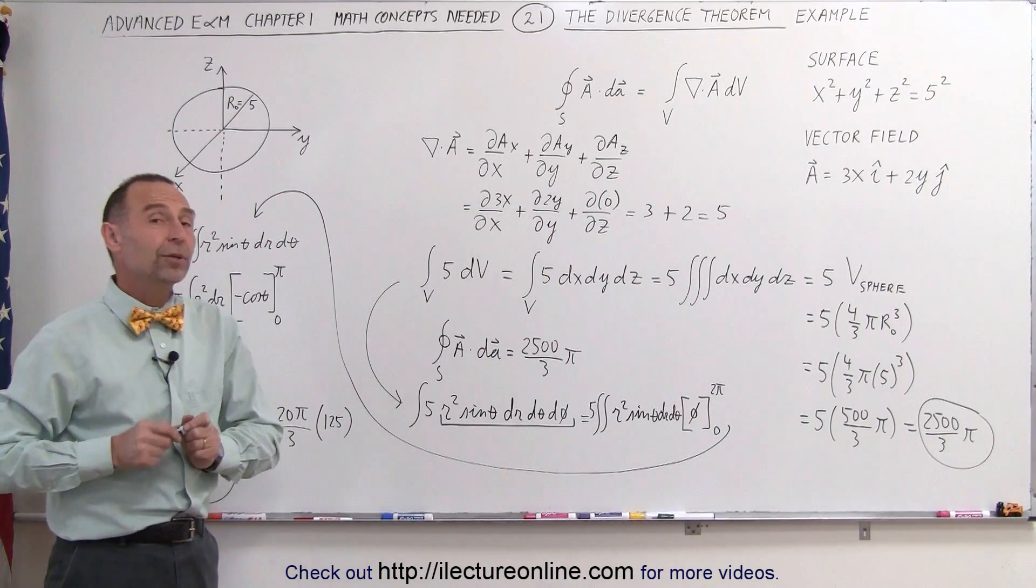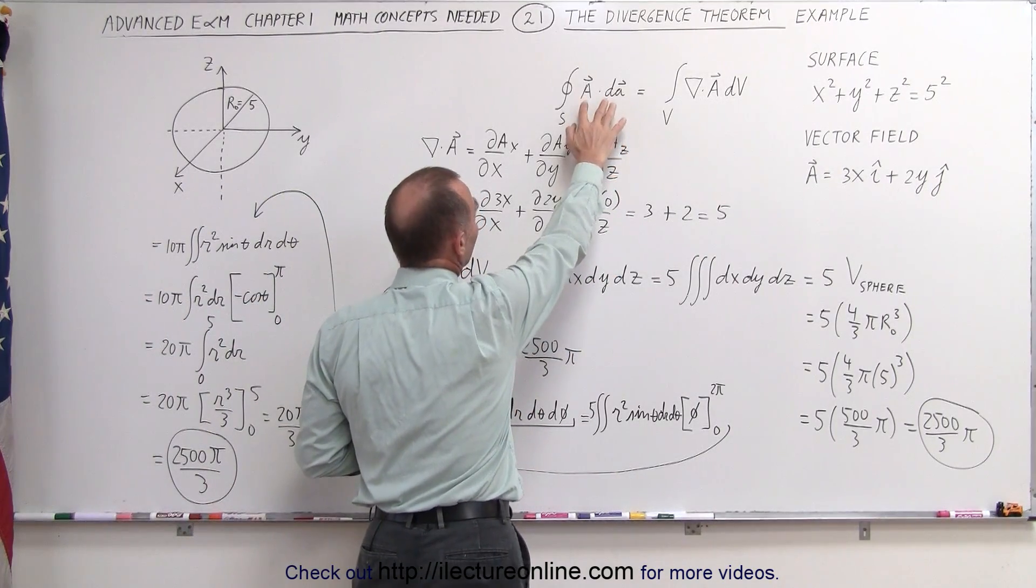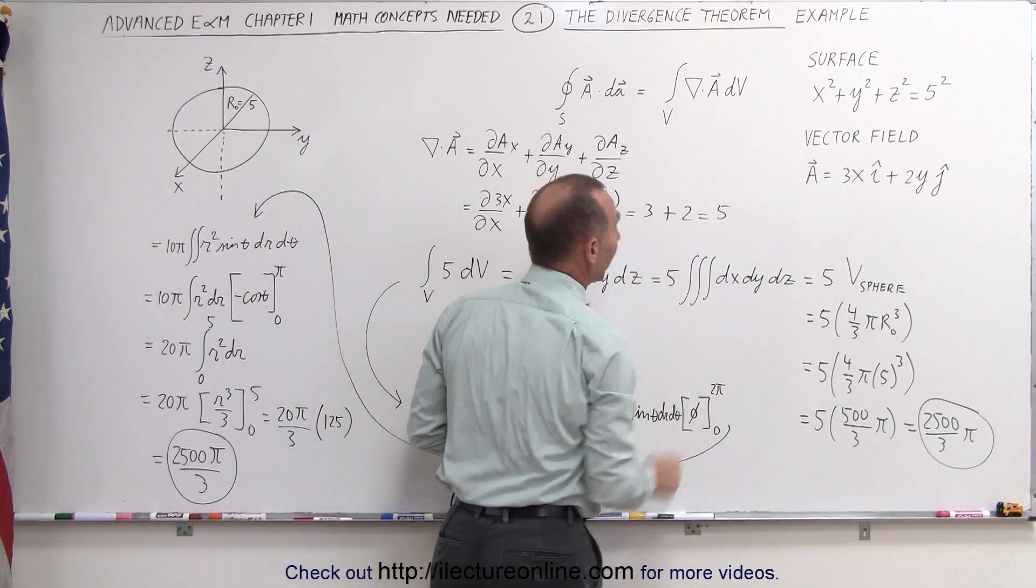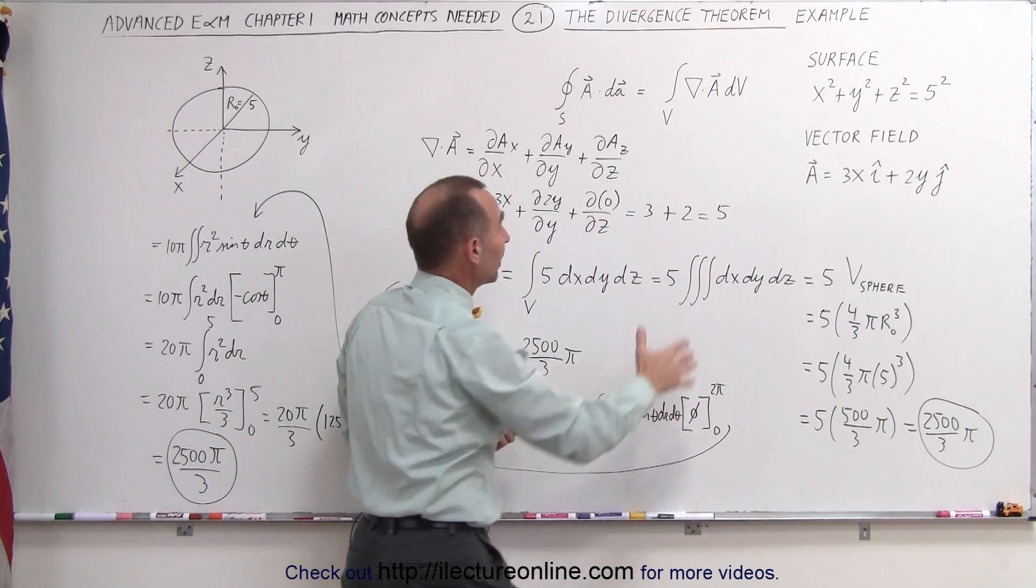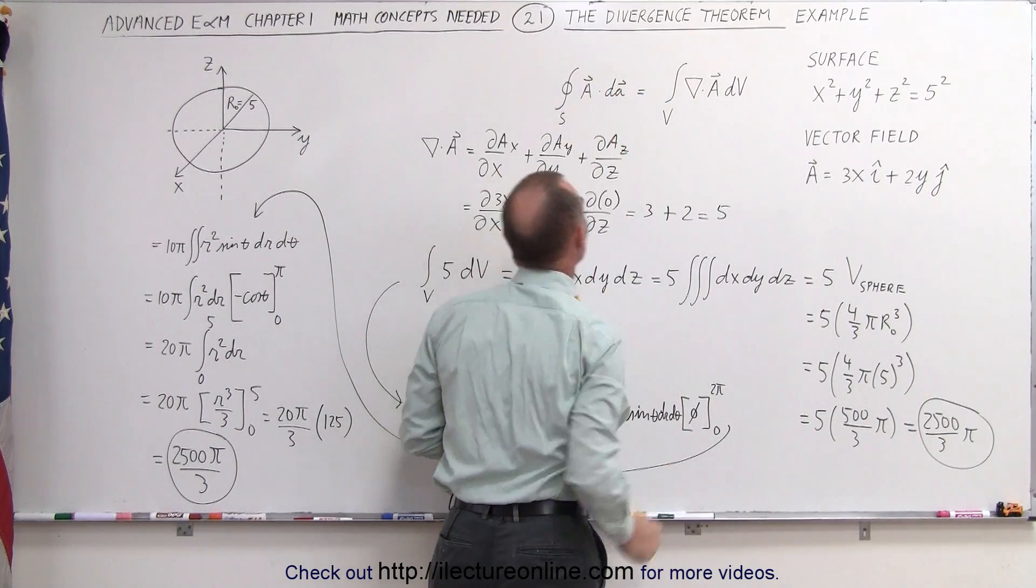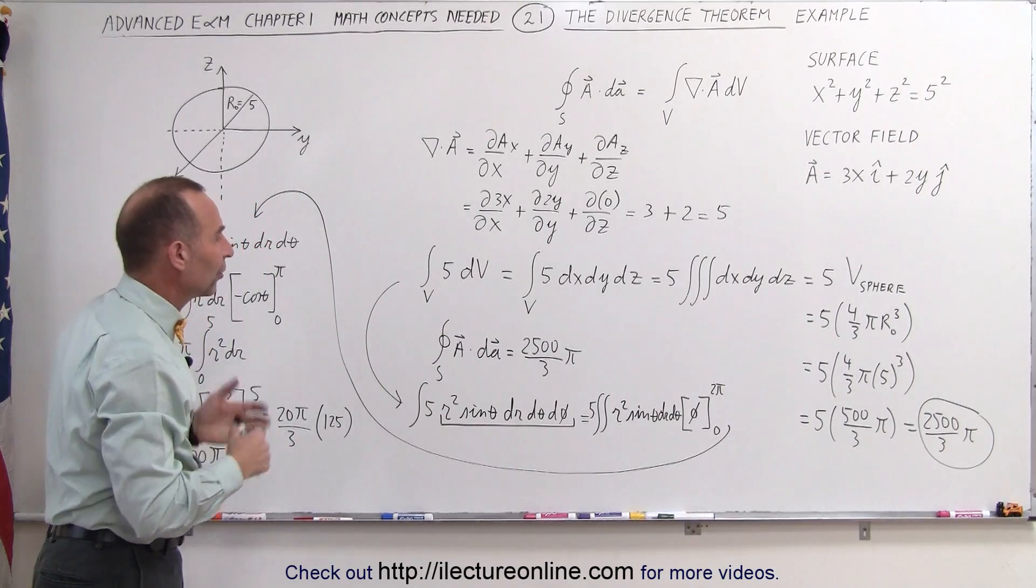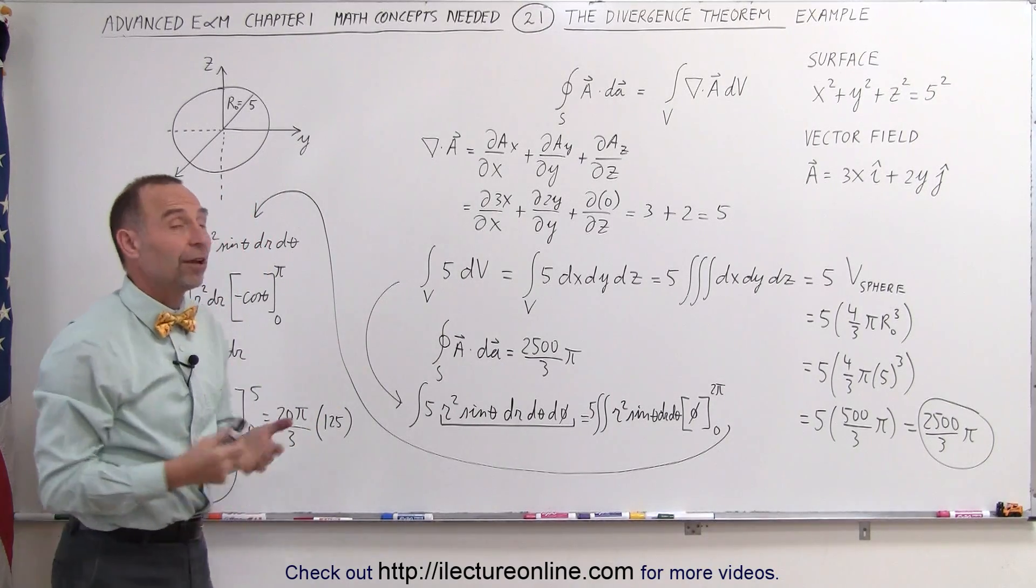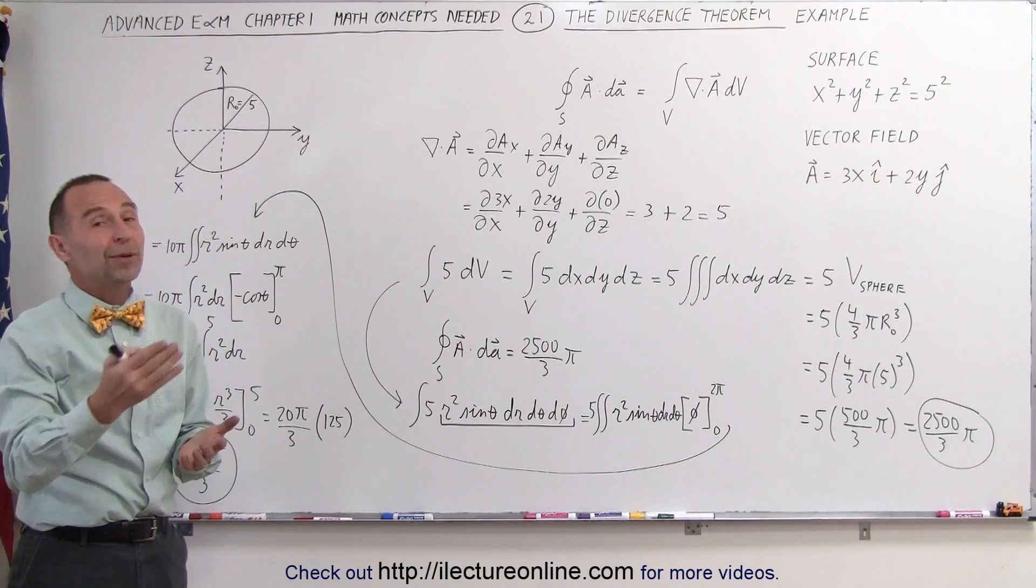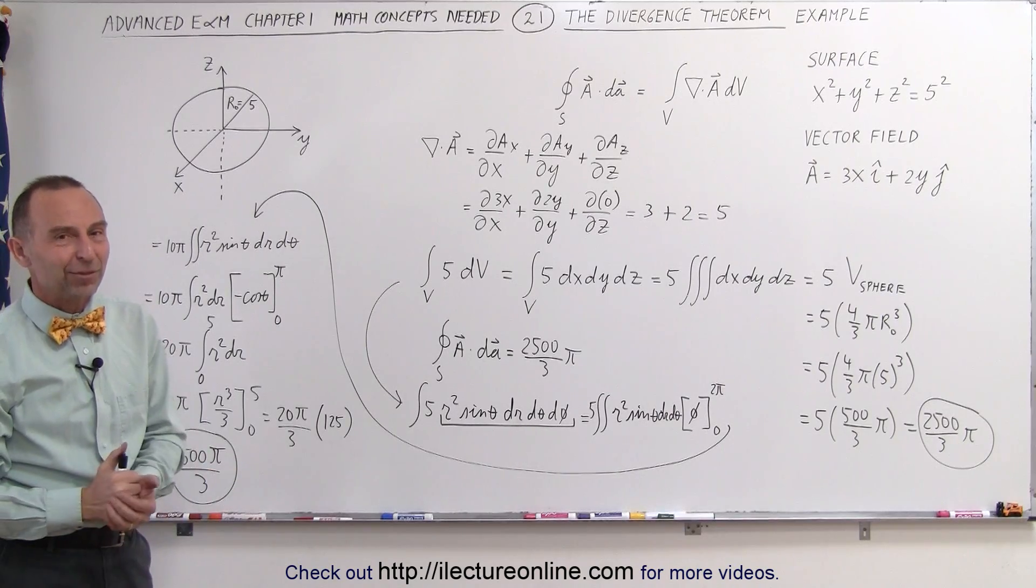So again, the divergence theorem can help us a lot, especially in cases where we don't know how to integrate the left side, we can then find a different way to integrate and use the right side. Sometimes, we don't know how to integrate the right side, and we can then convert it to the left side, which may sometimes be an easier integral to work. And so here's another example of how to use the divergence theorem to make your life a little bit easier when you can't do the left side of the integral, or the equation, maybe you should try to integrate the right side of the equation. And that's how it's done.